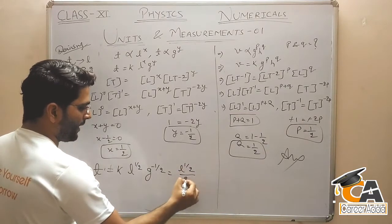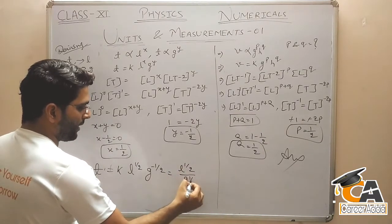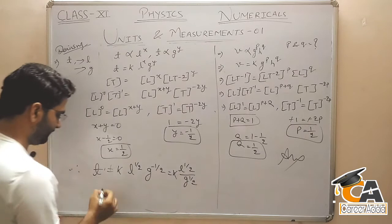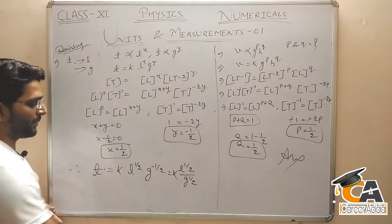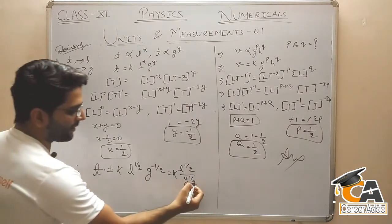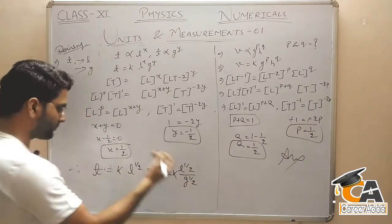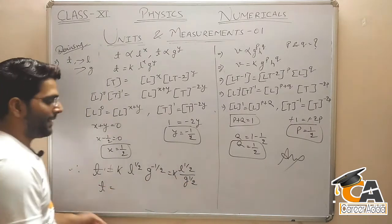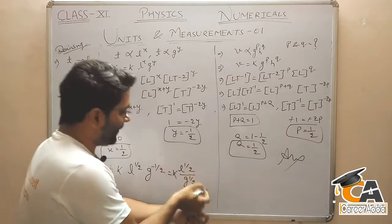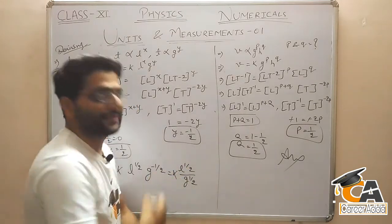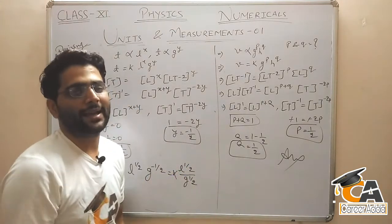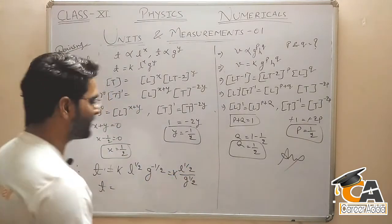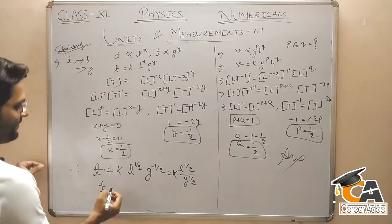Y is equal to minus 1 by 2 put करोगे तो X is equal to plus 1 by 2. Therefore T is equal to K × L^(1/2) × G^(−1/2). Minus 1 by 2 मतलब L^(1/2) / G^(1/2) हो जाएगा। 1 by 2 को root लिखते हैं, cancel मत करना बच्चों — powers ऐसे cancel नहीं होते।